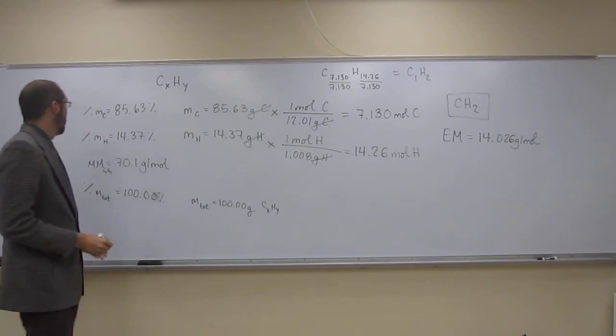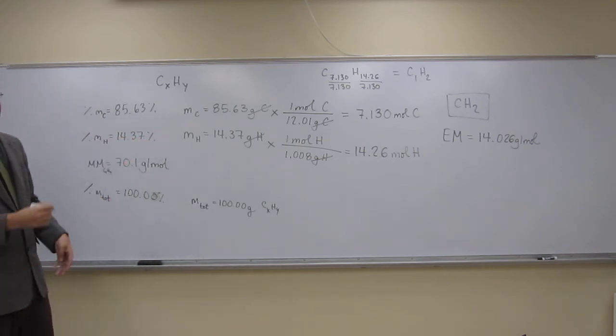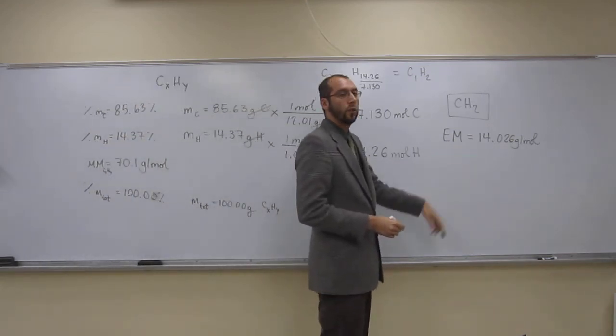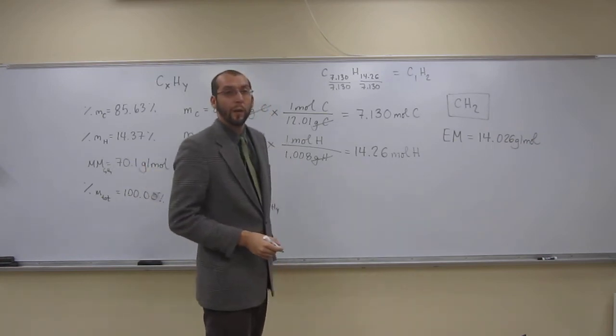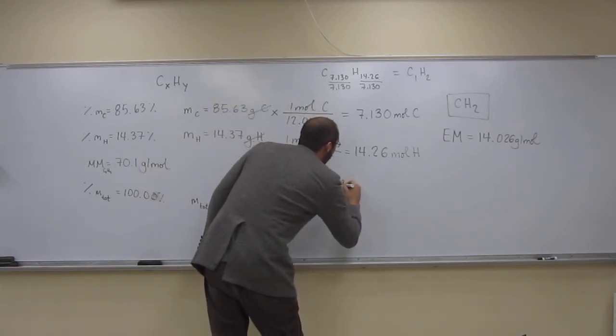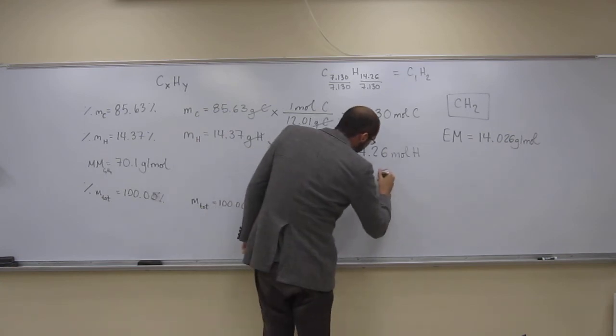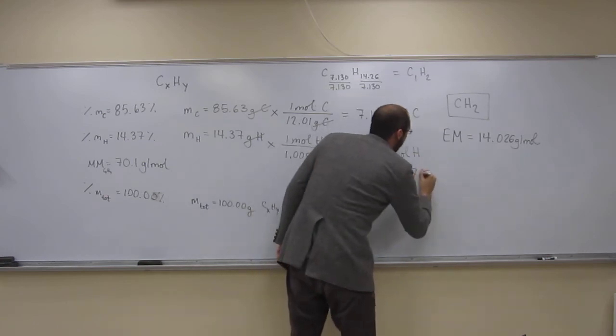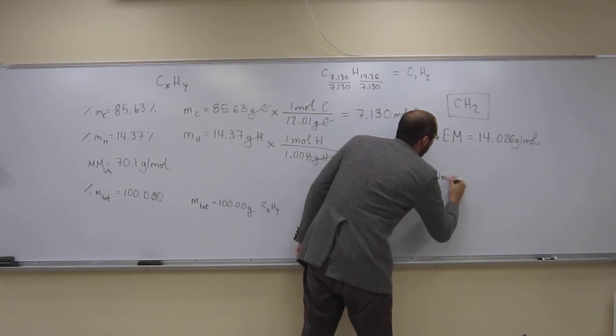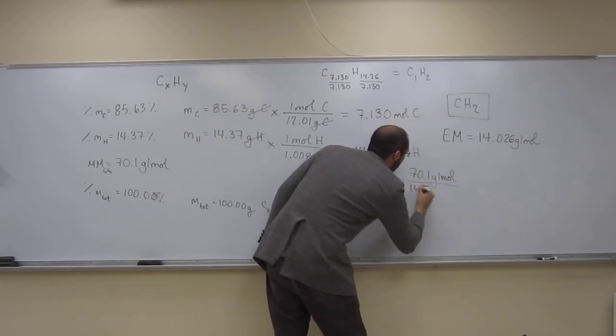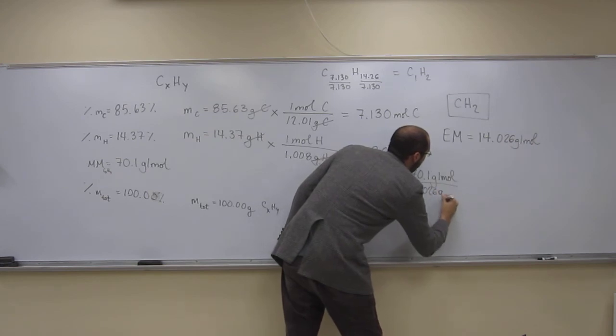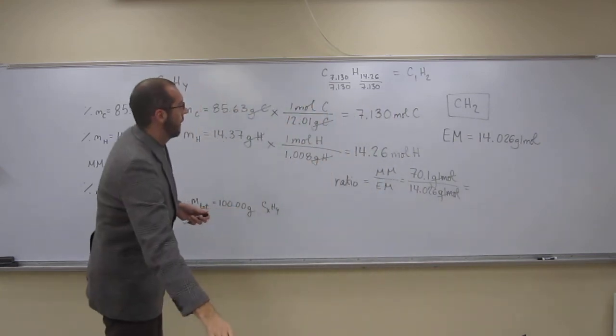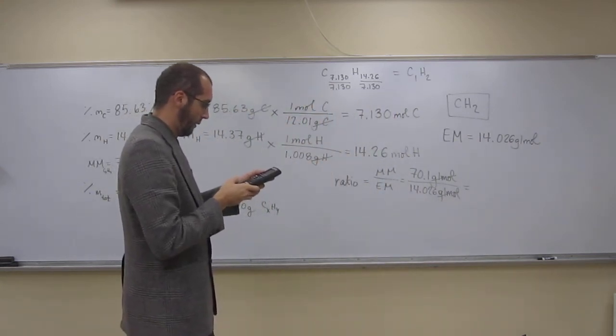So, how do I figure out what the molecular formula is? I've got to figure out, well, what's the ratio between the molar mass and the empirical mass? So, the ratio is going to be the molar mass divided by the empirical mass. That's 70.1 grams per mole divided by 14.026 grams per mole. This should be 5, but let's just make sure.